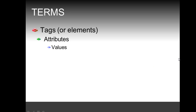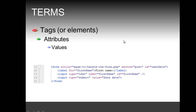Other terms you should be aware of since you need some background in HTML: I'm going to use the terms tag and element interchangeably. Tags have one or more attributes, and attributes have values. In this example, the first tag is the form tag. Its first attribute is the action attribute, with the value 'page_to_handle_the_form.php'. The second attribute is method, with the value 'post'. The third attribute is ID, with the value 'userData'.